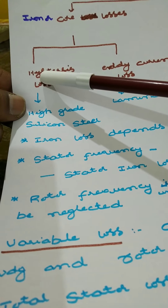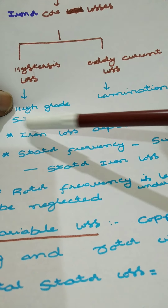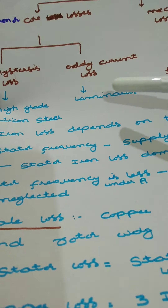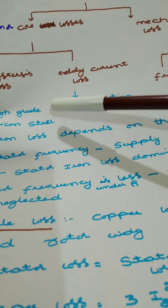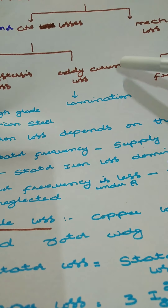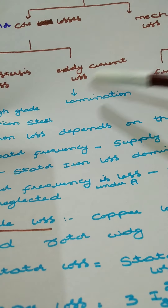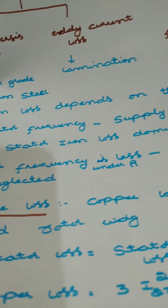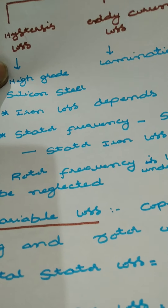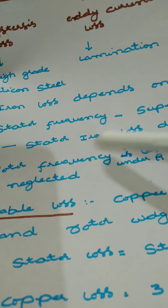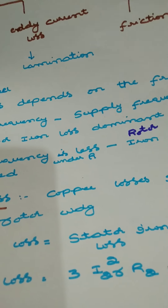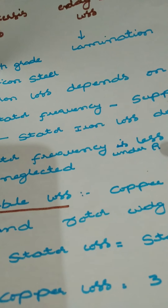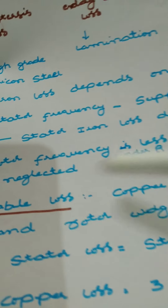Hysteresis loss can be minimized by using high-grade silicon steel. By making the core in laminations, you can reduce eddy current losses. Core loss depends on frequency. Stator frequency is always equal to supply frequency, therefore stator core loss is dominant. Rotor frequency is less under running conditions, therefore rotor core loss can be neglected.